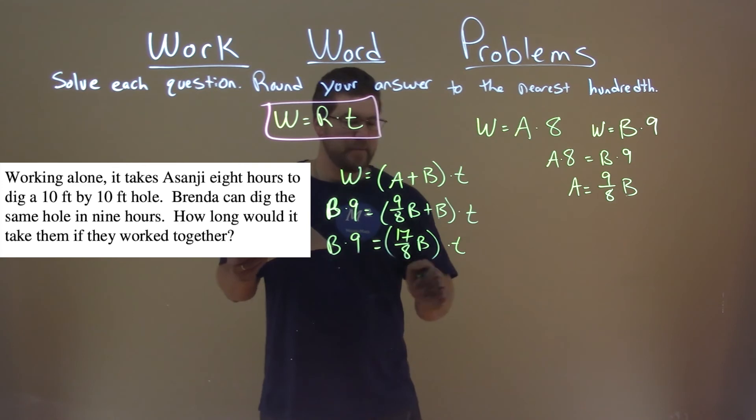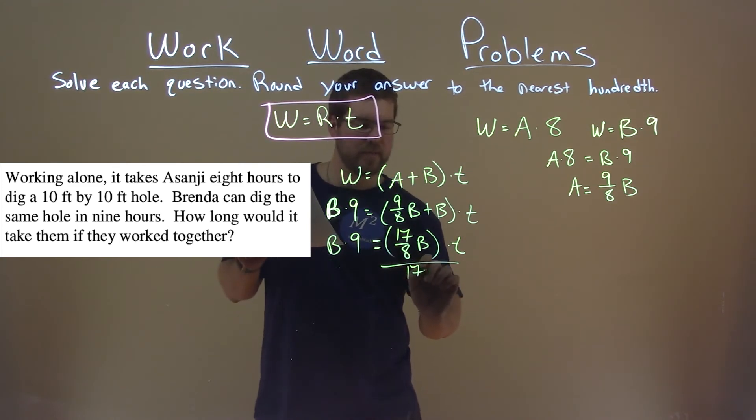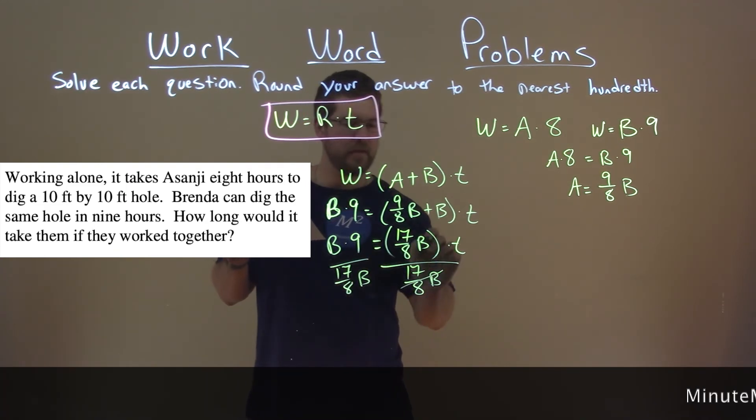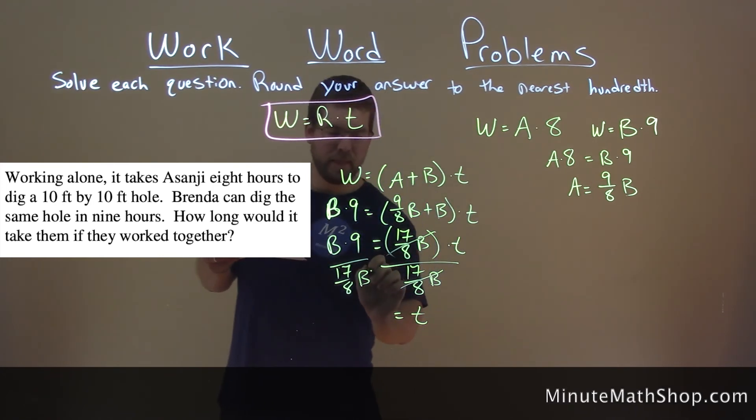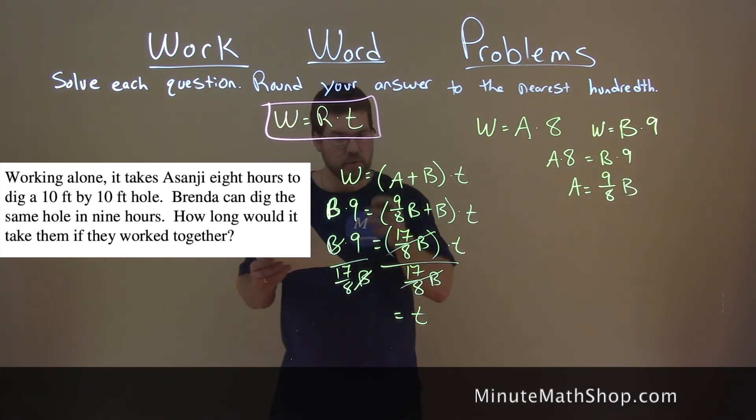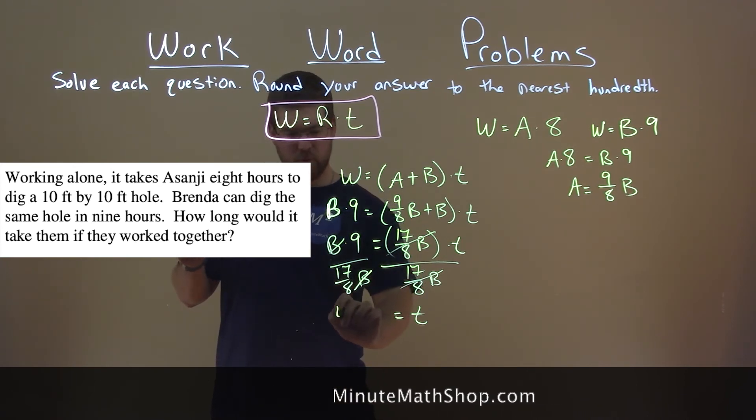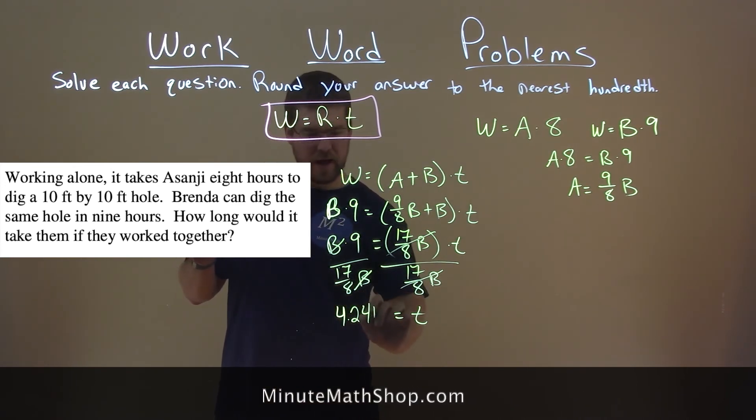Well, we want to get T by itself, so divide both sides by seventeen over eight B. These cancel, we'll have T by itself, and the letter B cancels here. So nine divided by seventeen-eighths is 4.24 hours.